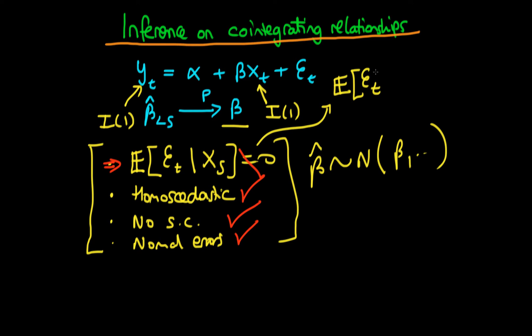the expectation of et given changes in x for any time period s have to be equal to zero. This is actually a slightly more correct way of writing the strict exogeneity assumption. So how does that help? Well the way this helps is if we write out the et,